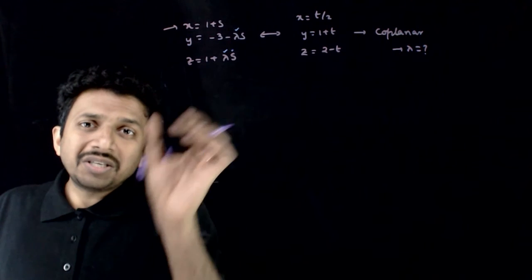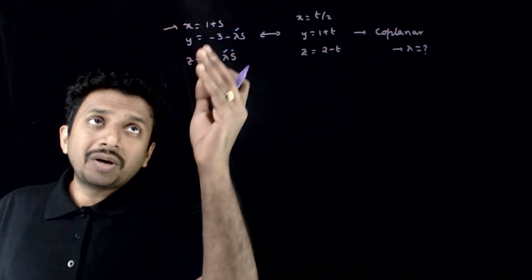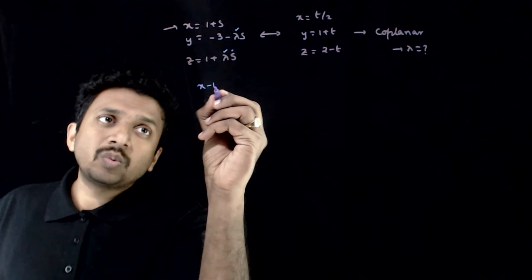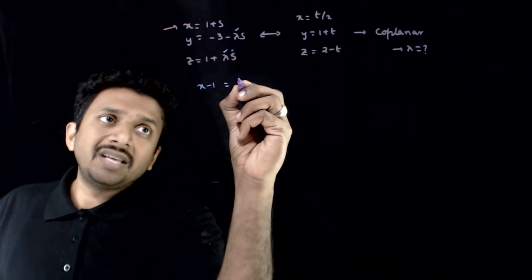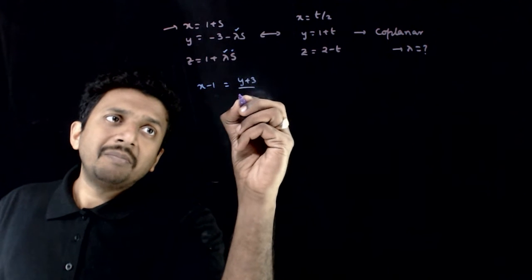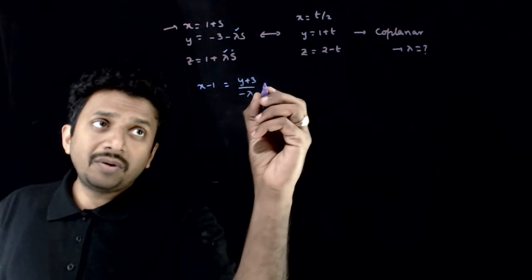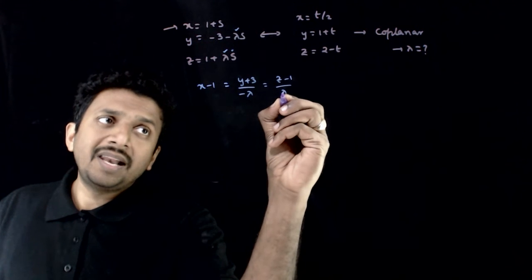This equation is given in parametric form. What is the actual equation? x minus 1 is equal to s is equal to y plus 3 by minus lambda, which is also equal to s, is equal to z minus 1 by lambda.